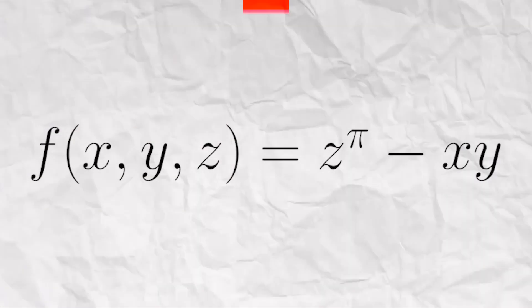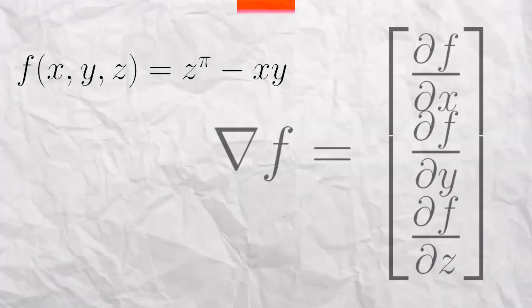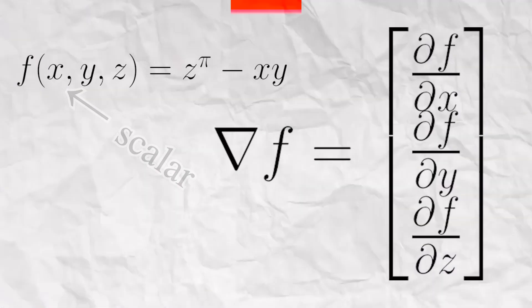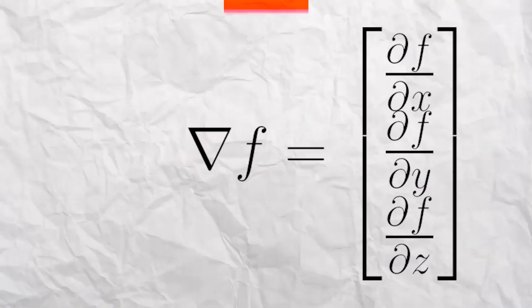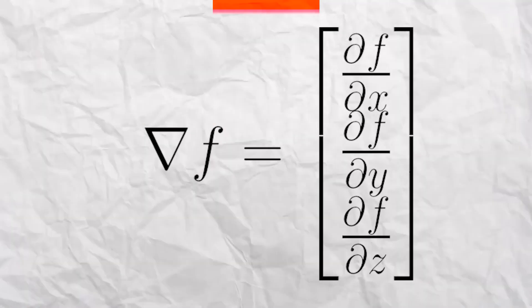Now, let's take this multivariable function for an example. Our multivariable function is scalar, while our gradient is vector. The symbol in front of the F is regularly called a nabla or a delt to denote that it's a gradient.